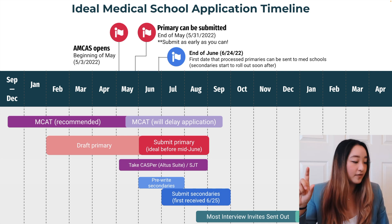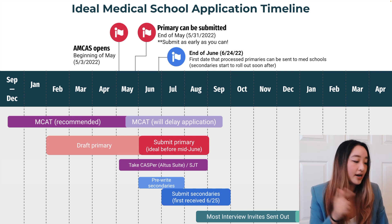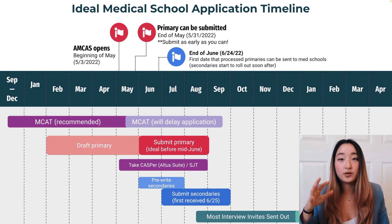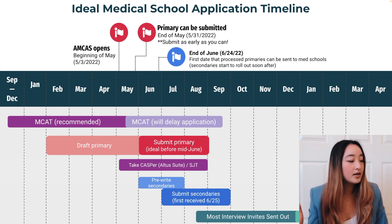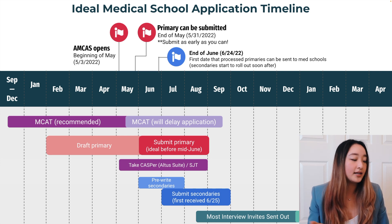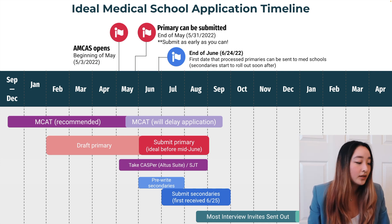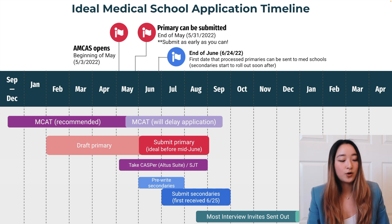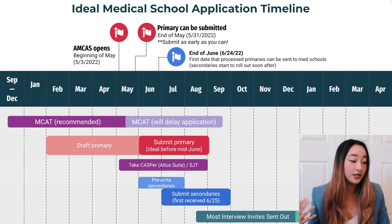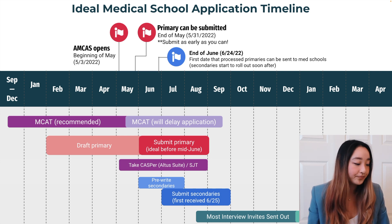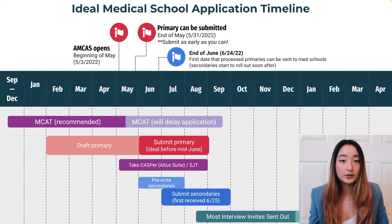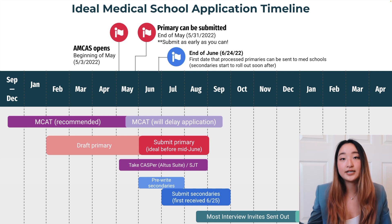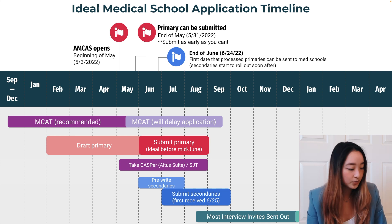Looking at the important dates at the top of the timeline: your primary application — which includes your activities, experiences, and more — opens at the beginning of May, typically in the first week. Your primary application can be submitted at the end of May, so May 31st for this cycle. Definitely submit as early as you can so that you can receive secondaries from medical schools as early as possible.